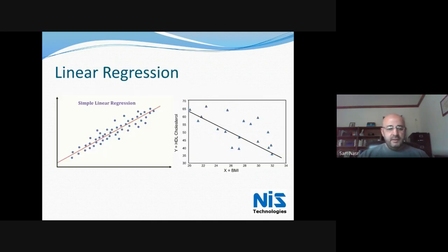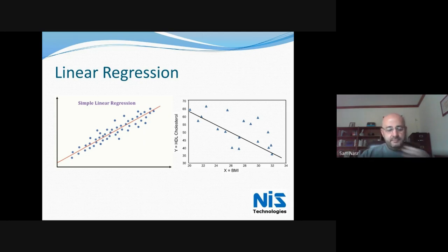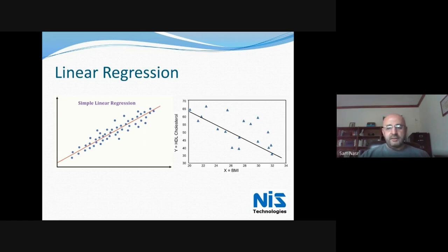Some of these things may be a simple linear regression — as the value of X increases, so does the value of Y. But it can also be inversely proportional, like the graph showing HDL cholesterol versus BMI: as your body mass increases, your good cholesterol drops. That is an inverse proportion, but still within a linear regression. Essentially what we're doing is giving the model some data to train on, and then it will be able to identify the trend from that data.